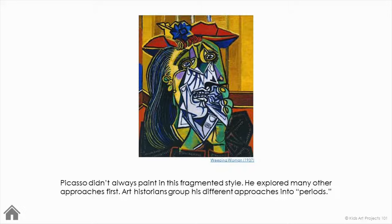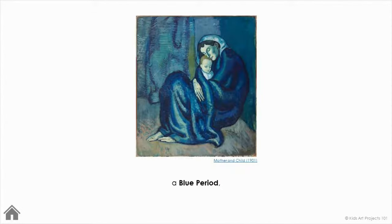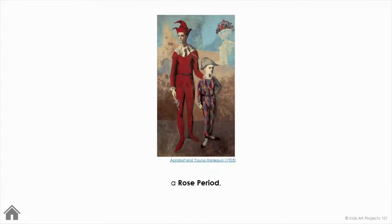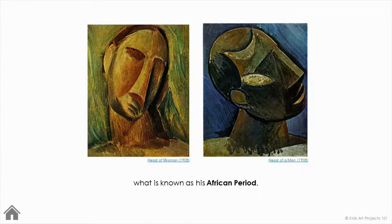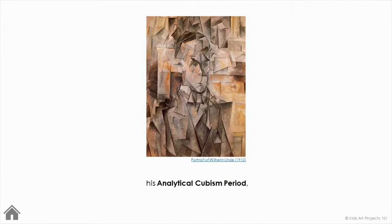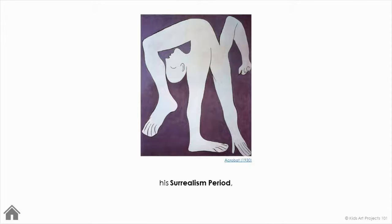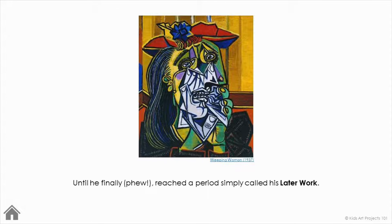Picasso didn't always paint in this fragmented style. He explored many other approaches first. Art historians group his different approaches into periods. He had a realistic period, a blue period, a rose period, what is known as his African period, his analytic cubism period, his synthetic cubism period, his neoclassicism period, and his surrealism period.